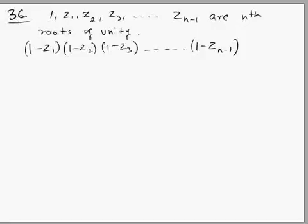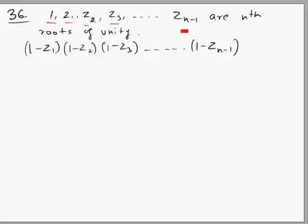This is question number 36 — an objective solved example on complex numbers. In this question, these are given as nth roots of unity: 1, z1, z2, z3, and so on up to z(n-1) — the nth roots of unity.